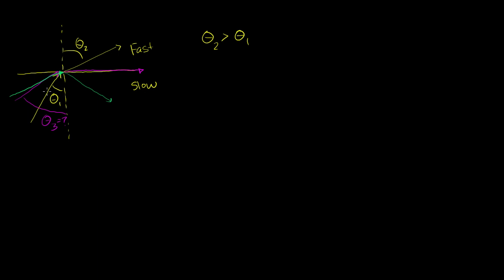And to figure that out, what we need to do is figure out at what angle theta 3 do we have a refraction angle of 90 degrees. At what angle theta 3 do we have a refraction angle of 90 degrees? That incident angle is going to be called our critical angle, because if you have an angle anything larger than that, you're actually not going to have refraction — you're not going to escape the slow medium, you're just going to reflect at the boundary back into the slow medium.